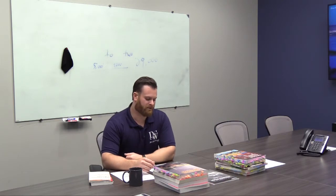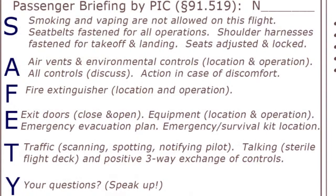The first thing we should do before we get in the aircraft is the passenger briefing. The trigger is prior to getting in the aircraft — you tell the passenger how to get in and out. Then, once you're seated, you tell them things like it's a no-smoking flight, where the emergency exit is, location of survival equipment, how to use seat belts, and that you will have a three-way positive exchange of controls. Or if they're not going to be flying, you say: if I put my hand up, I'm not being rude, I just need to hear something.